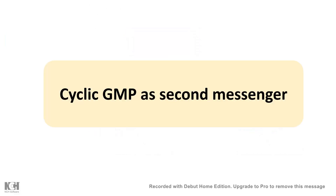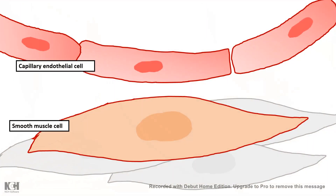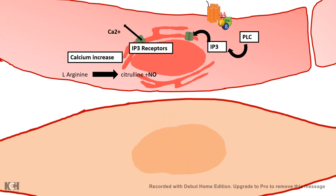Apart from cyclic AMP, cyclic GMP can also work as a second messenger. Researchers observed that directly injecting acetylcholine into muscle caused contraction, but injecting it into nearby blood vessels caused dilation instead of constriction. In quest of understanding this, they found that blood vessels have acetylcholine receptors which are G protein coupled receptors, and acetylcholine ultimately gives rise to phospholipase C activation.